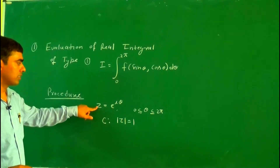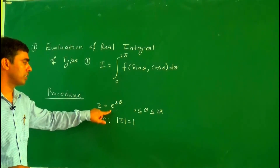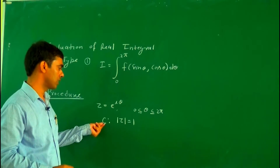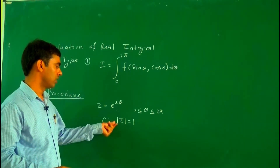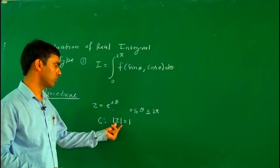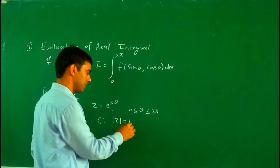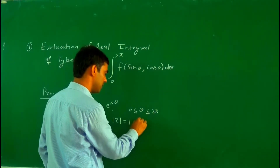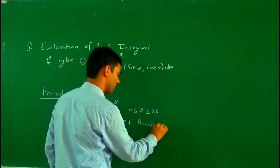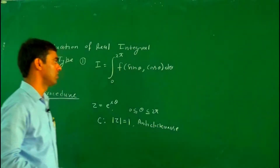If we take the modulus: |z| = |e^(iθ)| = 1. So this contour C is a unit circle with equation |z| = 1. The orientation of C is anticlockwise, which means the orientation is positive.